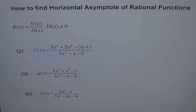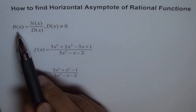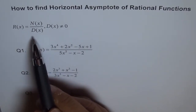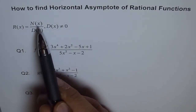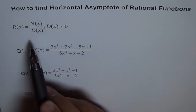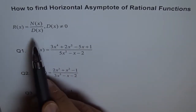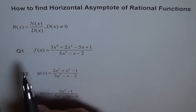How to find the horizontal asymptote of rational functions? This is a very important question. A rational function is basically a ratio of two polynomial functions — a polynomial in the numerator and another polynomial in the denominator. The only condition is that the denominator cannot be zero, since you cannot divide by zero.